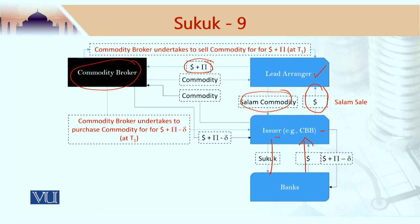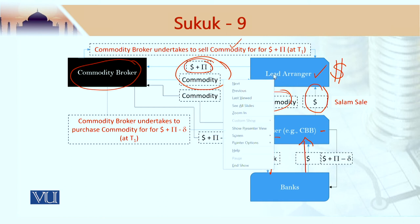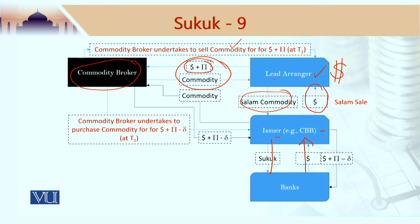In those 30 days, the lead arranger has the money and would be using it for banks looking for liquidity — this could be on a Salam basis or another Sharia-compliant means. At the end of the Sukuk Salam period, this commodity transaction would take place pursuant to the WAD between the commodity broker and the lead arranger. The commodity would then come to the lead arranger, who would deliver it to the issuer, i.e. the Central Bank of Bahrain.